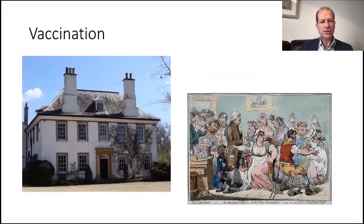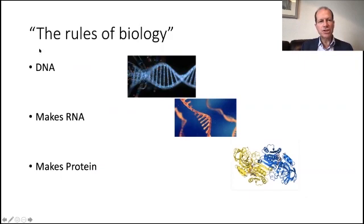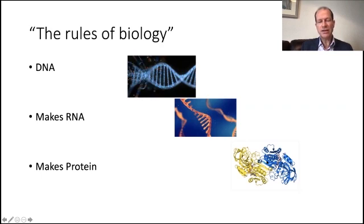So, vaccination. This is Dr. Jenner's house in Gloucestershire — a proud British history of vaccination. One of the major rules of biology is that you get DNA, the code, from your mother and father. Then as it is used in cells, a transcript is formed called messenger RNA, which is decoded into proteins — the building blocks of your body. Most vaccines in the past, such as the one Dr. Jenner used, were proteins injected into your body to make an immune response.